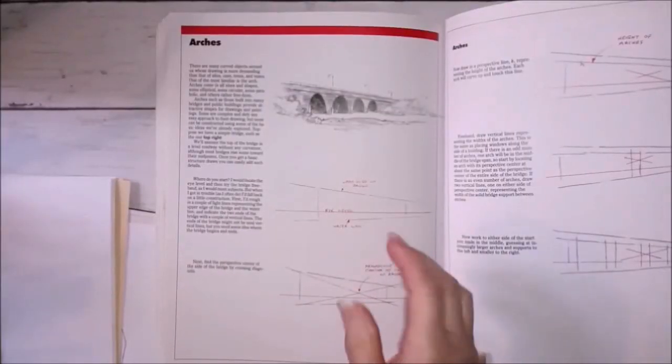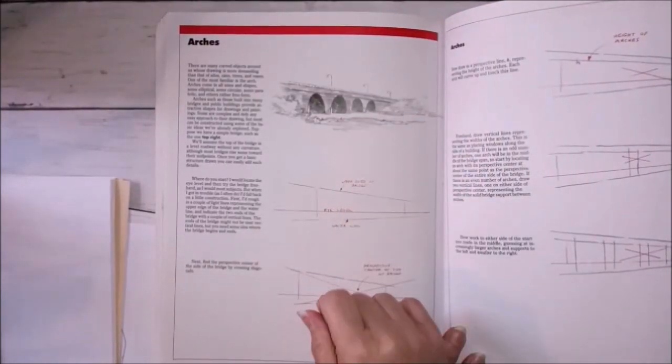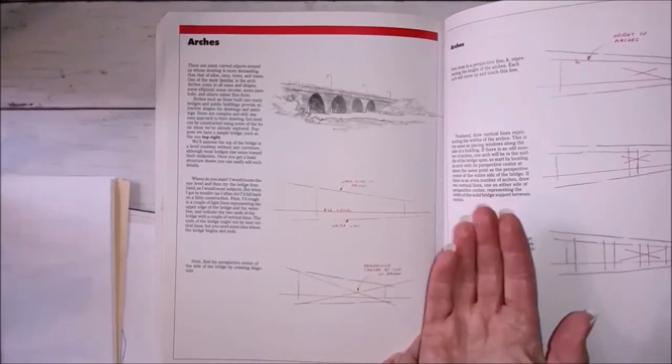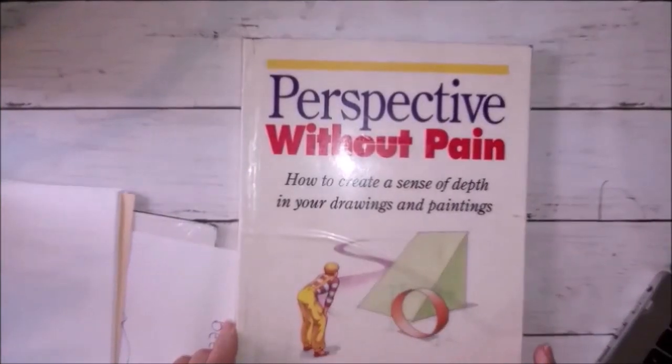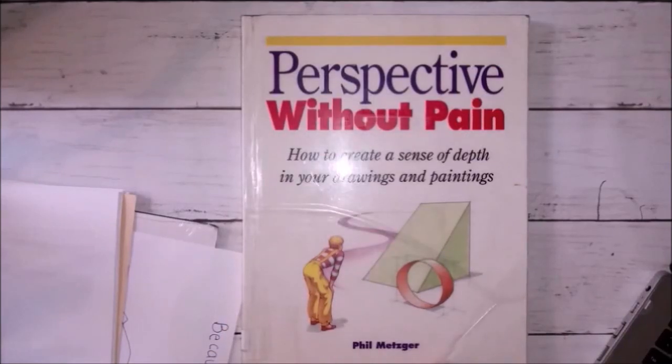With the help of colors, specific patterns, and light, images are created in a way so that the brain perceives them as different from what they really are. If you're interested in learning more about perspective, we have this book at the library, Perspective Without Pain. You can call our library and ask for this and you can get it with our curbside service.